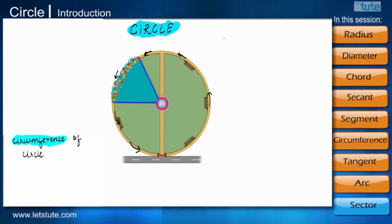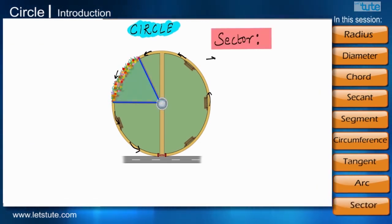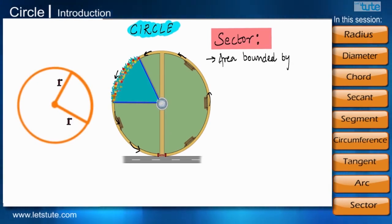If we concentrate only on that particular area, it will be called as a sector of a circle. Sector of a circle is the area bounded by two radii and an arc subtended between them.